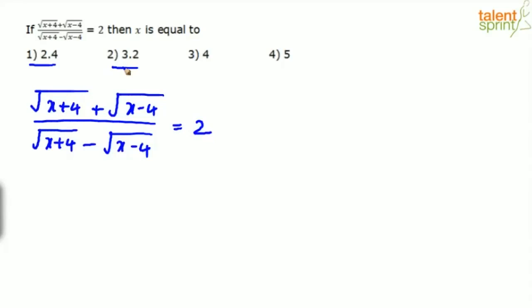Options 1 and 2 are complex: 2.4 + 4 = 6.4, and √6.4 is not a clean value. Similarly, 3.2 + 4 = 7.2, and √7.2 is not a perfect square. Try option 3 (x=4): 4+4=8, √8; 4−4=0. So it becomes √8/√8 = 1, but the right-hand side is 2 — so option 3 is wrong.